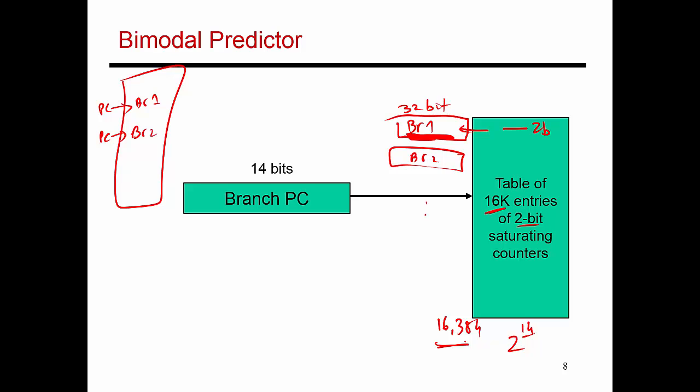Instead, what I'm going to do is look at branch 1. Branch 1 has a given 32-bit address, and the program counter is currently holding that address. That's the reason I fetched this particular branch instruction. I look at that 32-bit PC value, and from that PC value, I extract 14 bits. Those 14 bits give me a number between 0 to 16,383. Essentially, these 14 bits identify an entry in this large structure.